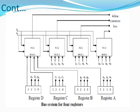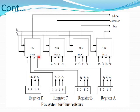Depending on selection lines S1 and S0, the output will be displayed on the 4-line common bus. If S1=0 and S0=0, then Register A is selected. So multiplexer 0 selects A0, multiplexer 1 selects A1, multiplexer 2 selects A2, and multiplexer 3 selects A3. These 4 bits are passed on the 4-line common bus.